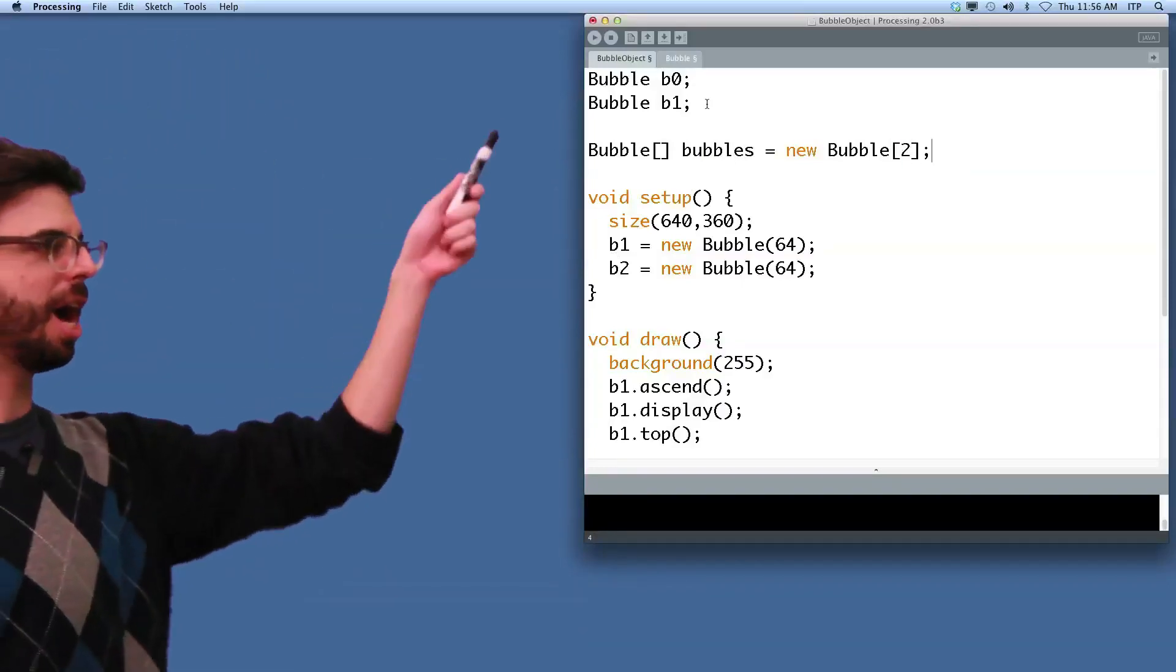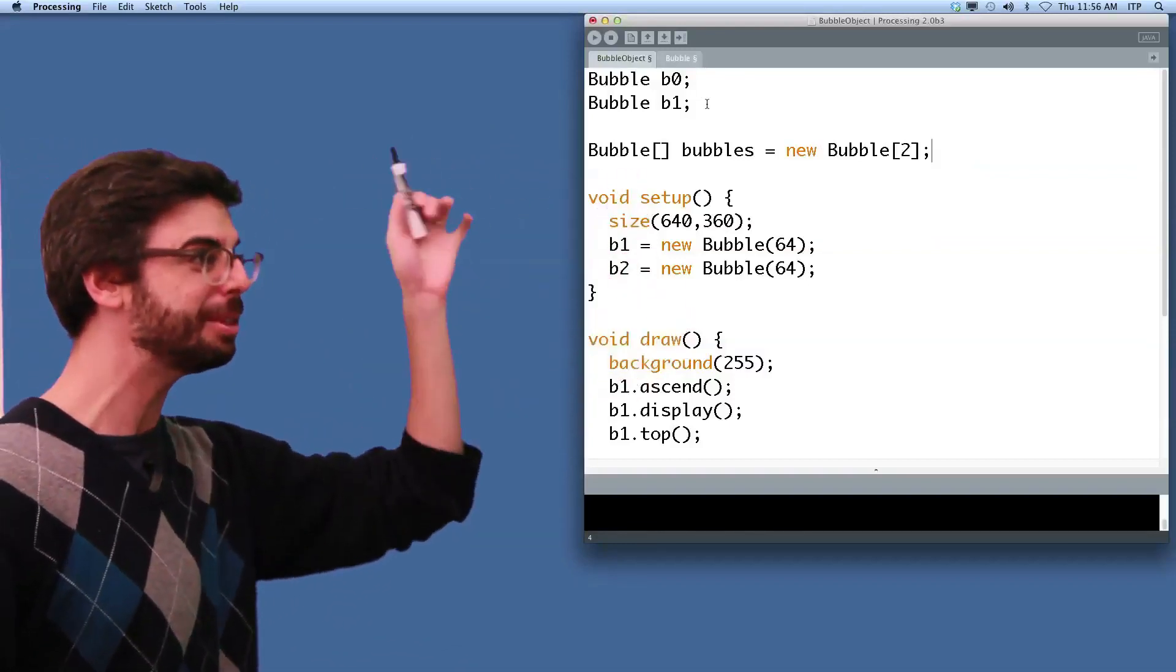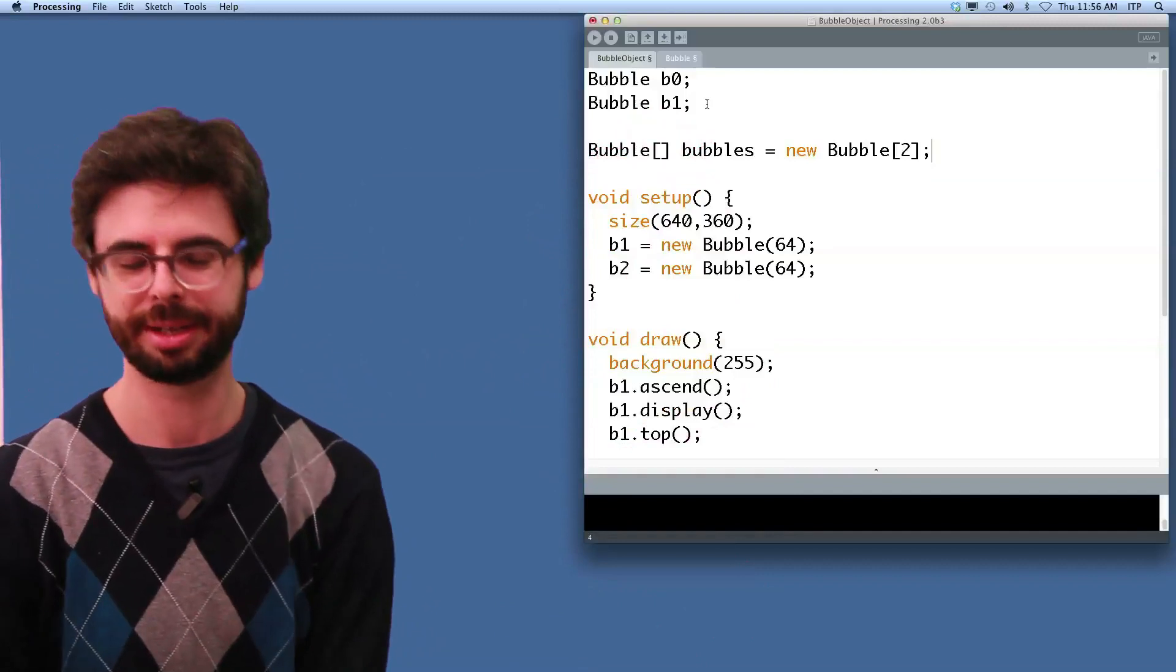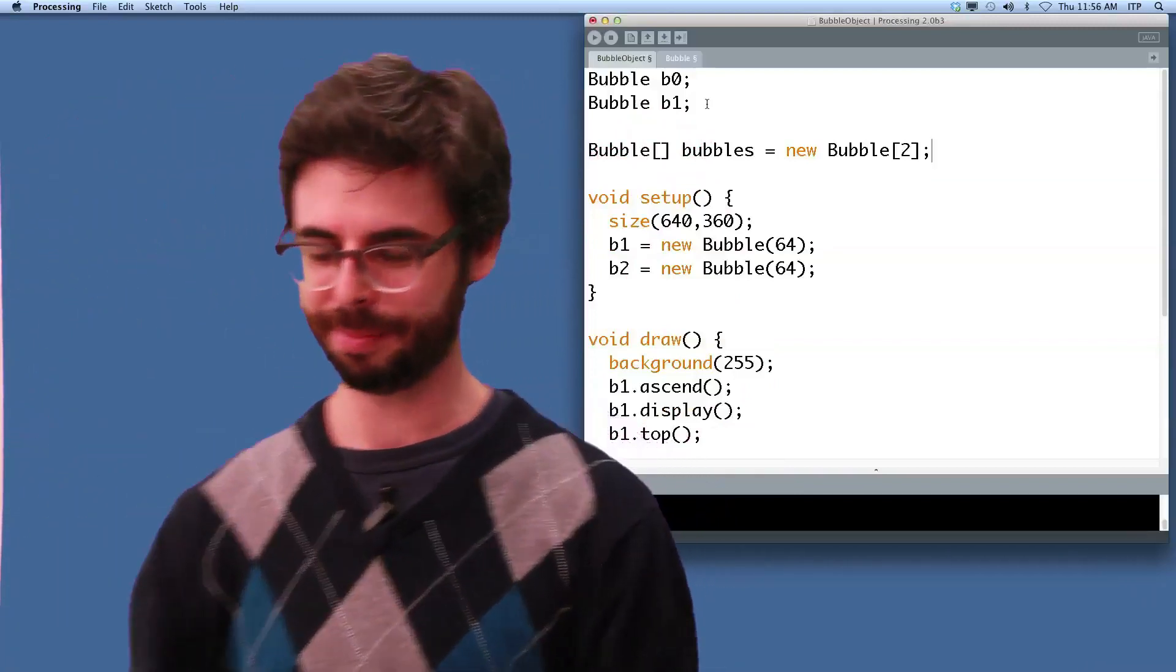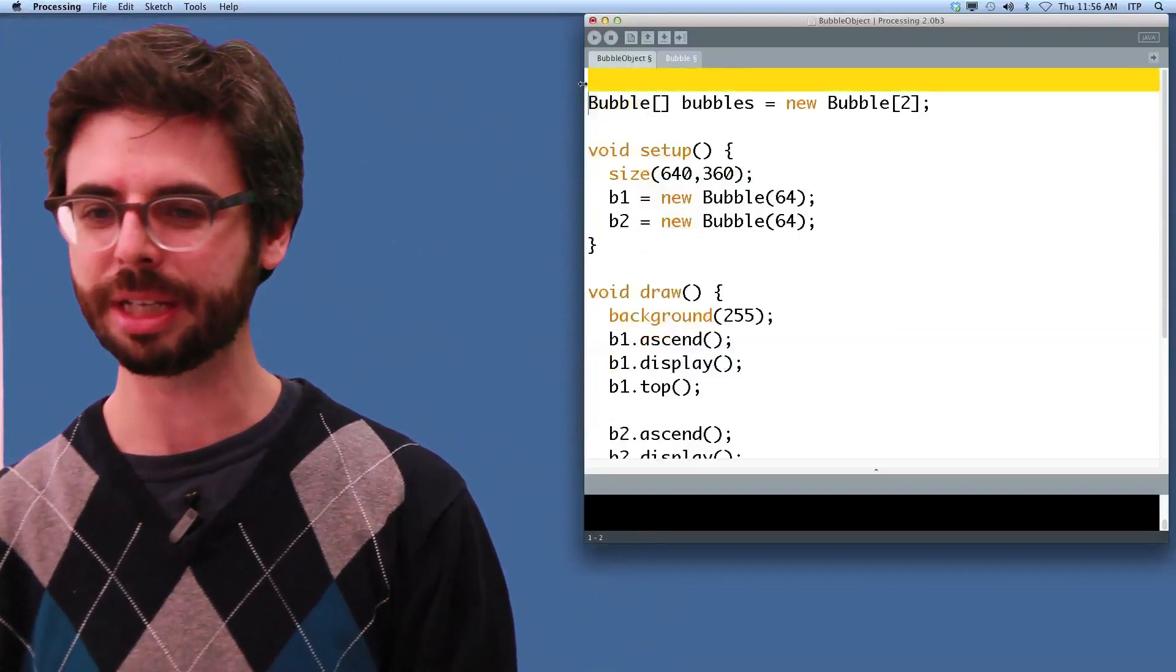It's going to be of type bubble. It's got the brackets, which means an array. The name is bubbles, and it has two bubbles in it. It's a lot of bubble everywhere, but this is what's happening to us right now. So we can get rid of this. Now, instead of initializing a single bubble,